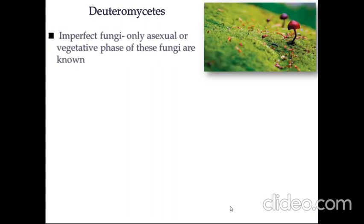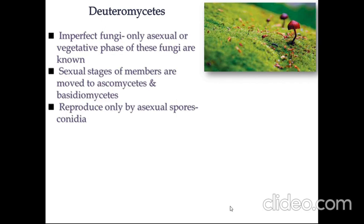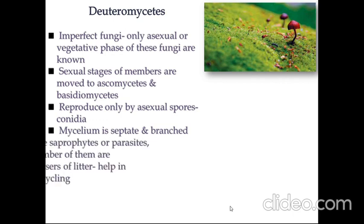The last class is Deuteromycetes, also called imperfect fungi, because only the asexual or vegetative phase is known. Sexual stages of members are moved to Ascomycetes and Basidiomycetes once discovered. They only reproduce by asexual spores known as conidia, and their mycelium is septate and branched.